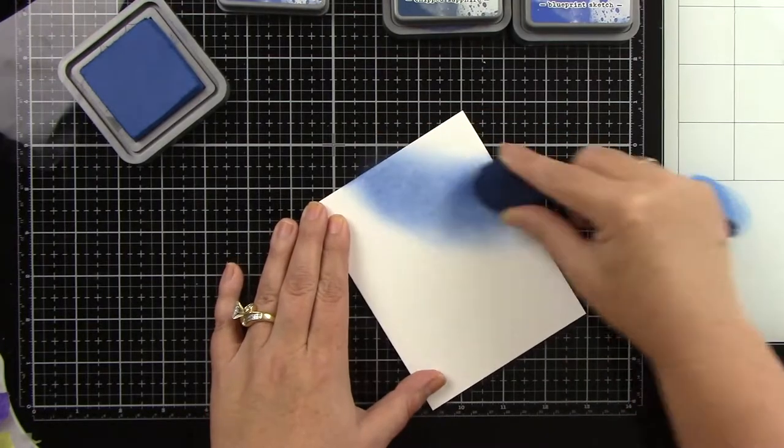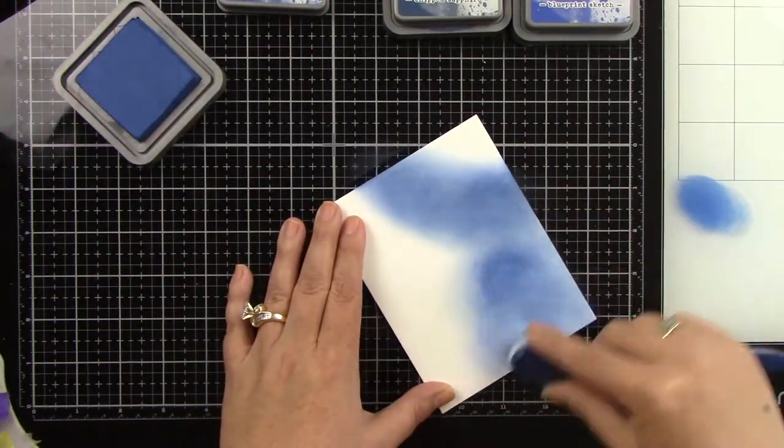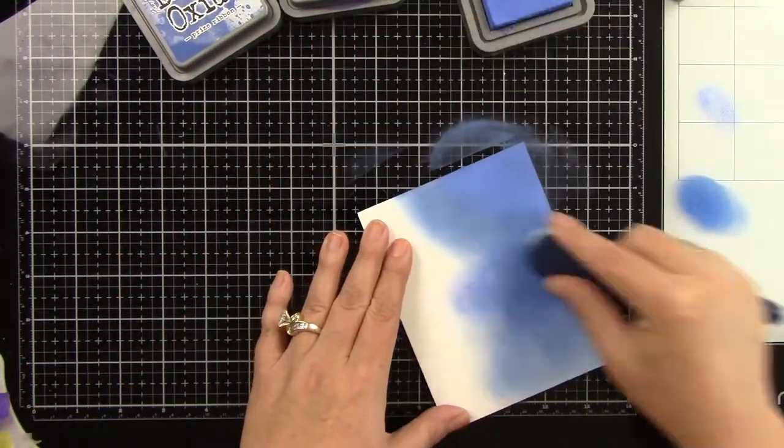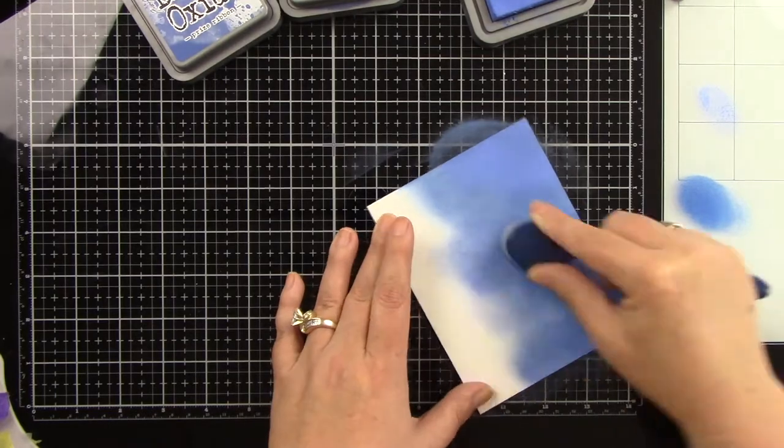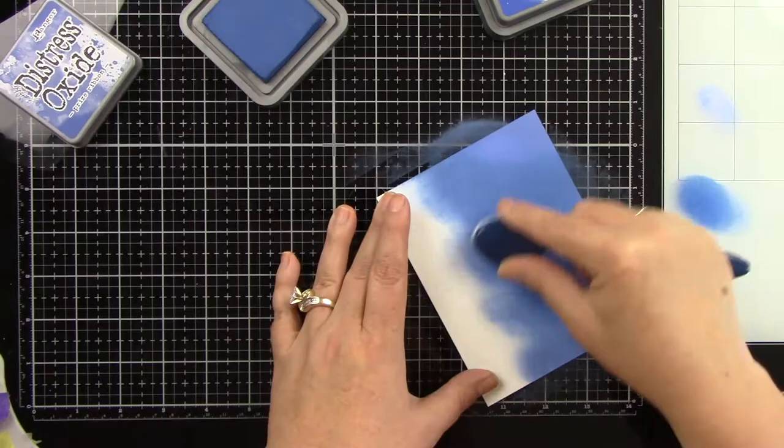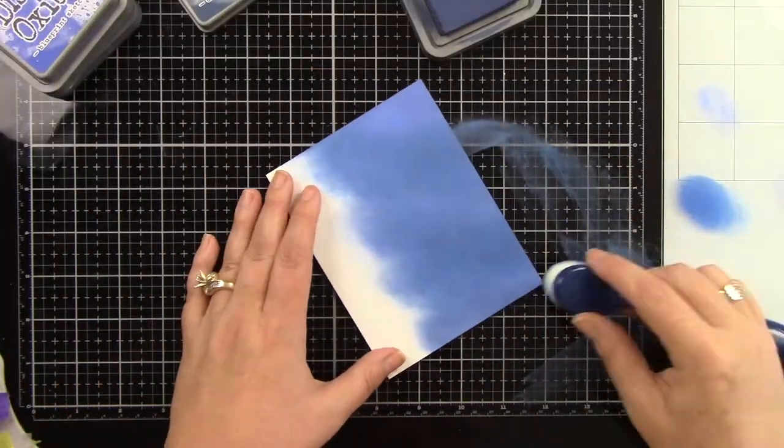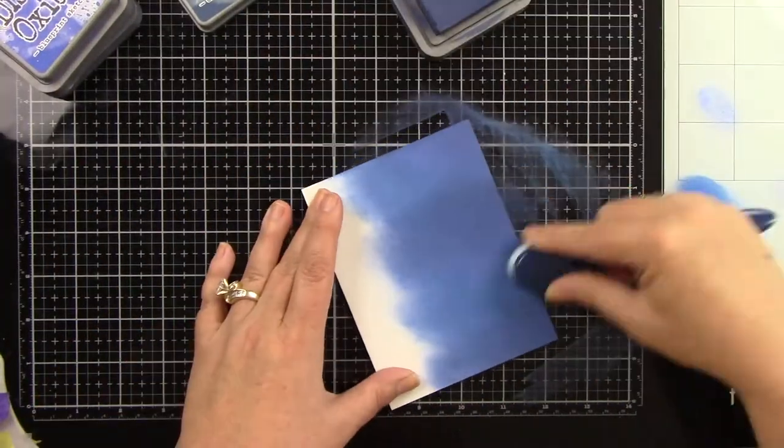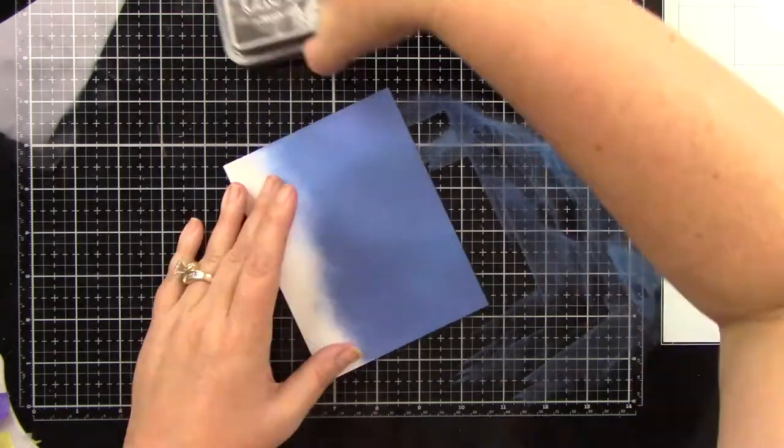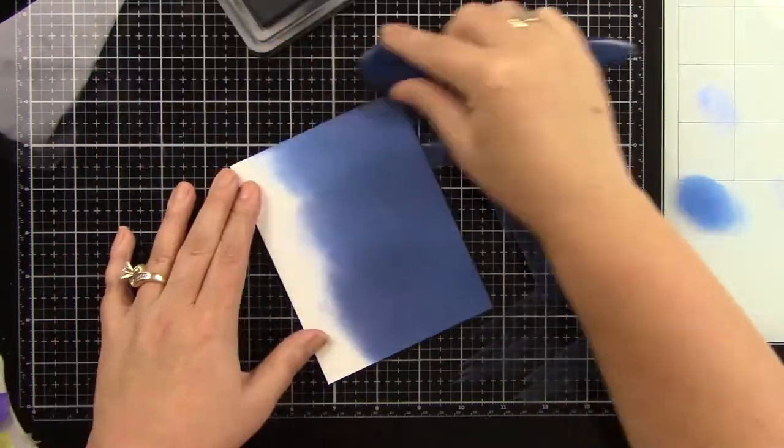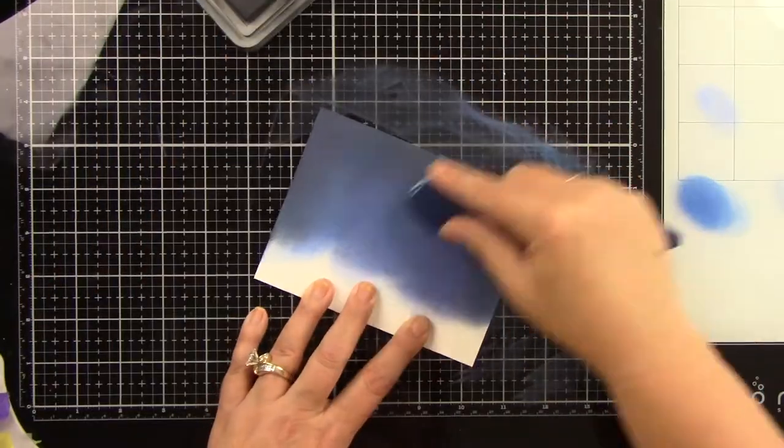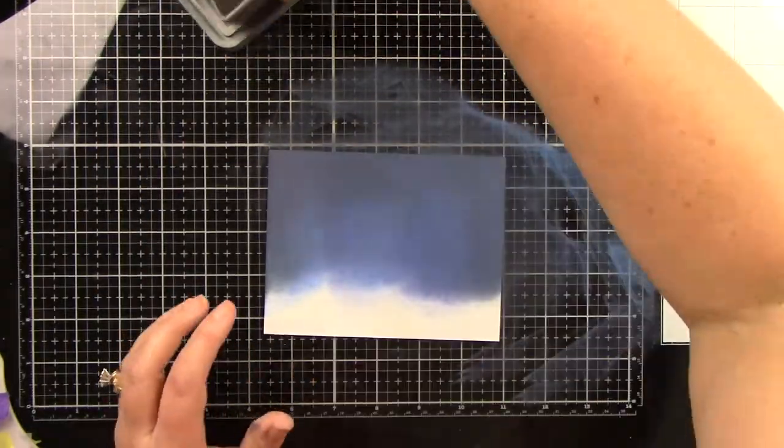Now I'm going to make my nighttime sky. I am using Blueprint Sketch, Prize Ribbon, and Chipped Sapphire. Blueprint Sketch and Prize Ribbon are pretty close in color, but I liked them all mixed together. And then I came in with a little bit of black soot at the end and just made it a little bit darker around the edges. I'm not trying to blend it nice and neat together because I kind of want a little bit of variation. I really like how it turned out.